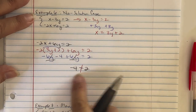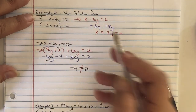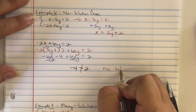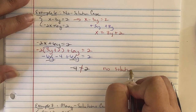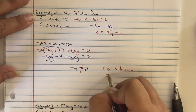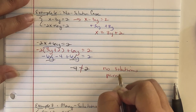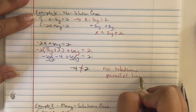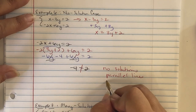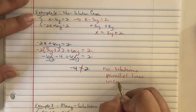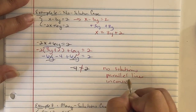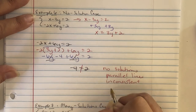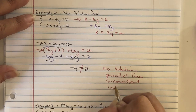When the variables cancel and leave a false statement like negative 4 equals 2, this means no solution — the lines are parallel, the system is inconsistent and independent.